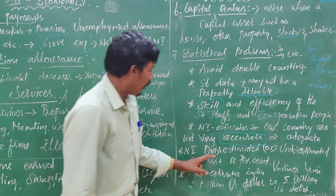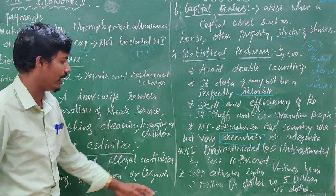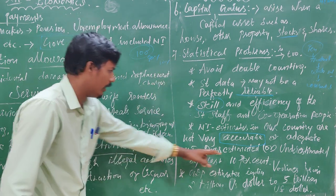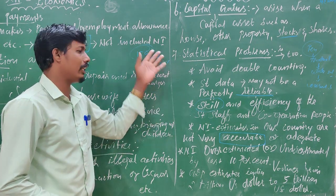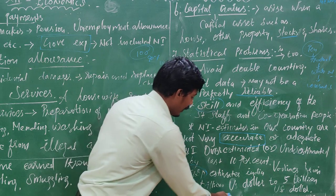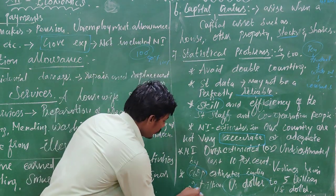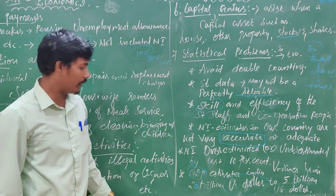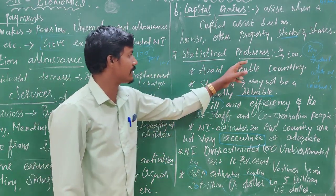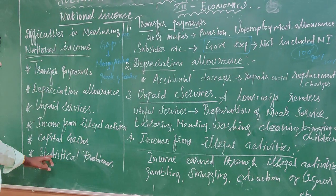National income is over-estimated or under-estimated by the last 10 percentage. Our country's data is not very accurate. Accurate and reliable data is needed. This is the statistical problem and the overall difficulty in measuring national income.